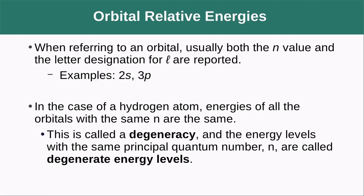When referring to an orbital, both the n value and letter designation for ℓ are reported: for example, 2s means n=2 and ℓ=0, or 3p means n=3 and ℓ=1. In the hydrogen atom, energies of all orbitals with the same n are the same. This is called degeneracy, and energy levels with the same principal quantum number n are degenerate energy levels.